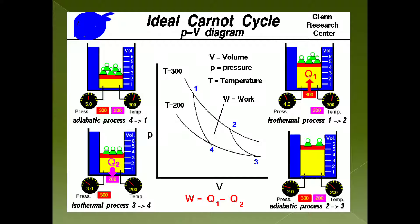Carnot's heat engine is perfectly reversible and can be operated in reverse, where it works as a refrigerator. In this case, heat Q2 is taken from the sink, external work is done on the working substance, and heat Q1 is rejected to the source. To increase efficiency, it is more effective to use a heat source at as high a temperature as possible. The Carnot engine has the highest efficiency compared to all other heat engines.